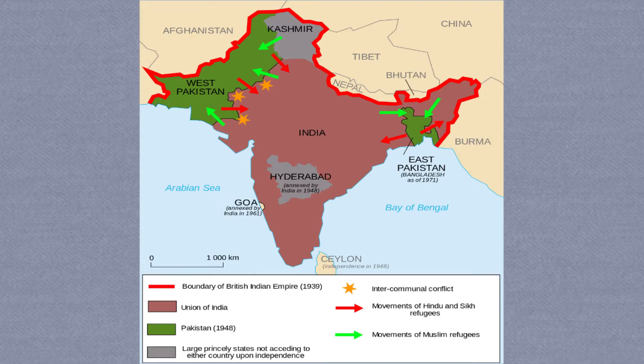There are still thousands of Biharis in Bangladesh who are often unwelcomed by both the Pakistani and Bangladeshi governments. In this map you can see where a lot of these transfers happened and how the Indian subcontinent looked at different points in time, showing where Pakistan was partitioned and later where Bangladesh was formed.